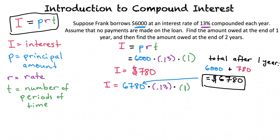Yes, perfect. Then $6,780 times 0.13 times 1 equals $881.40.